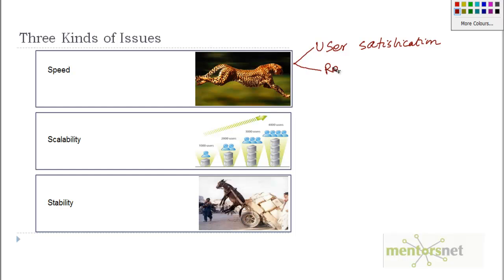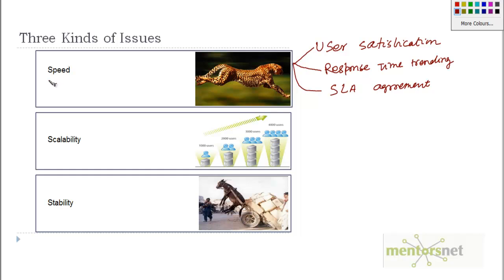Another speed-related issue involves the SLA agreement. When you start your business you give a service level agreement — for example, that you will respond in 5 milliseconds. You need to understand whether your system's speed is sufficient to meet that SLA agreement.